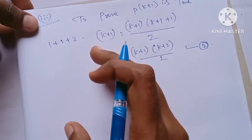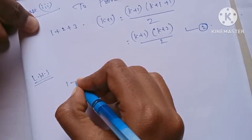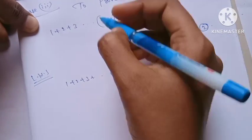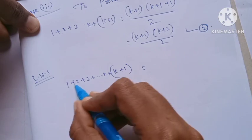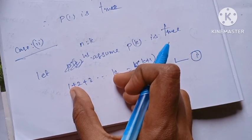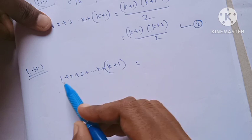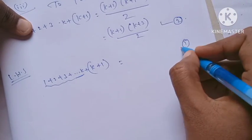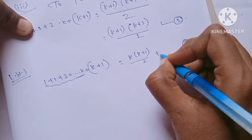To prove LHS equals RHS, we take LHS: 1 plus 2 up to k plus (k+1). We substitute Equation 1 for the sum up to k, replacing it with k(k+1)/2, then add (k+1). So LHS becomes k(k+1)/2 plus (k+1).